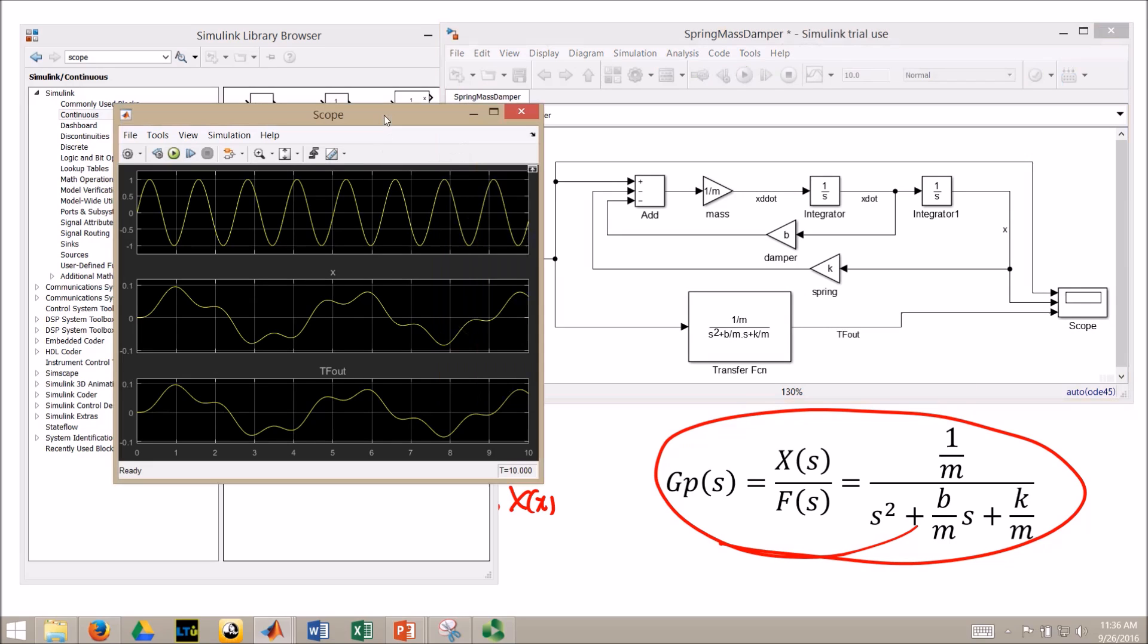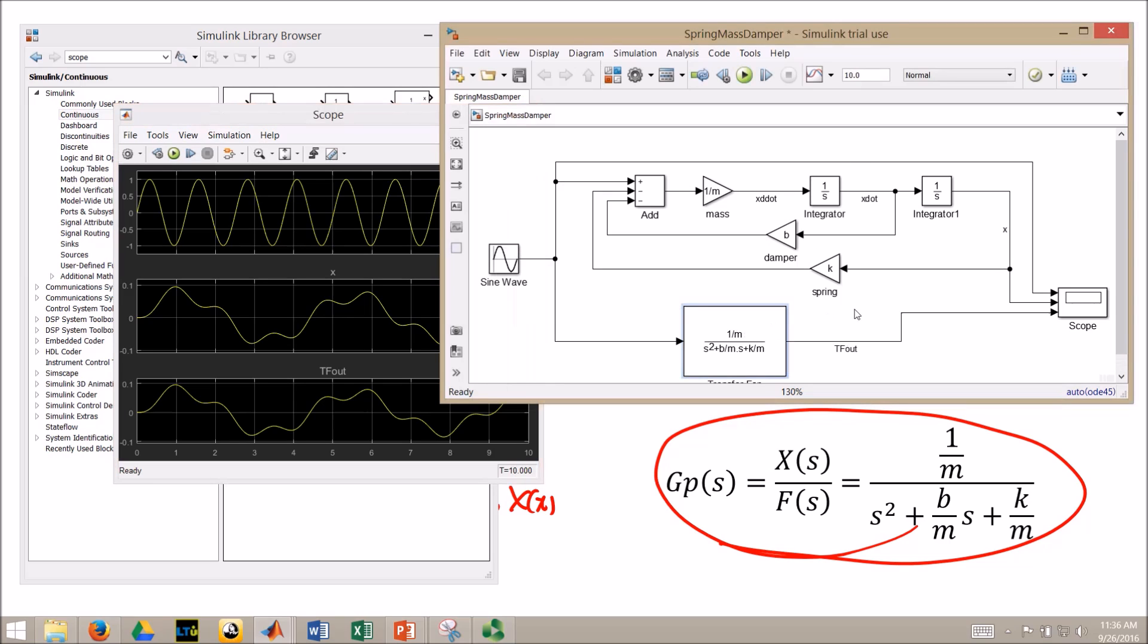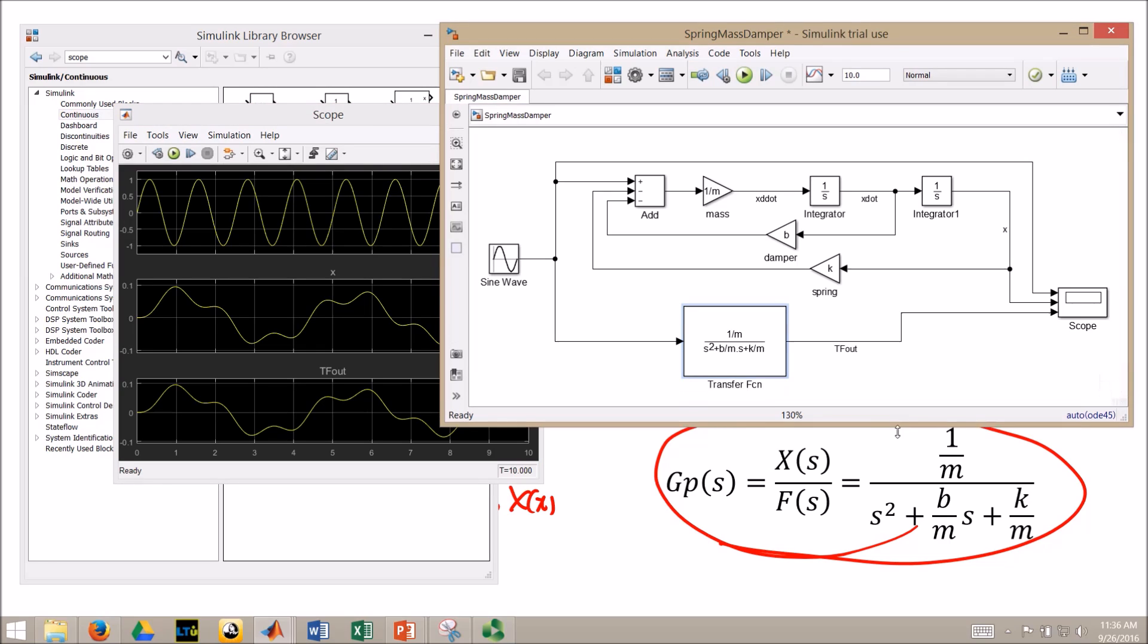And everything else should be good. So let's run it. And here we go. In my scope, I have my input sine wave. I have a kind of a funky looking output, the x, which is this output for my primitive blocks. And I have my output for my transfer function. And yeah, I'll buy that. We got the same thing. So I can take all of those primitive blocks and if I'm willing to do the math up front, replace them with a simple transfer function block for a linear time invariant system. Okay.